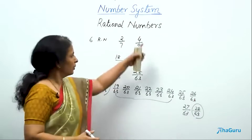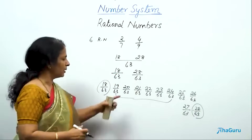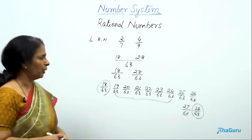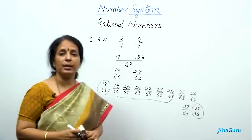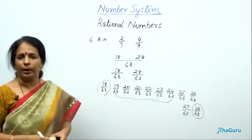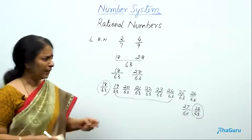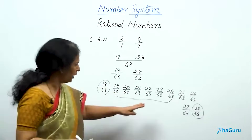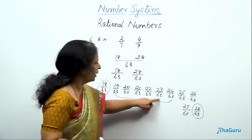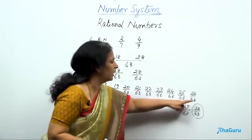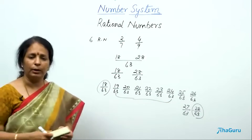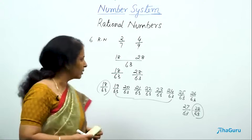So with this method we have got the result. But suppose instead of 6 you were asked for 20 numbers. With this method, I only got 9 numbers between 18/63 and 28/63. So where will I go for the remaining 11 numbers?